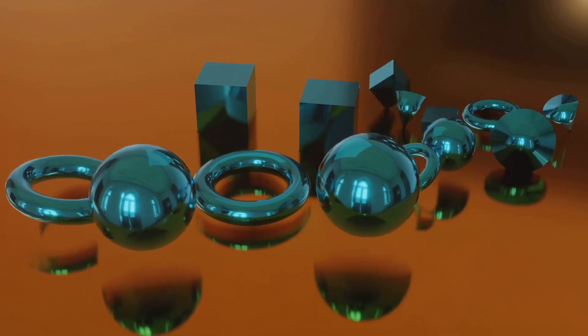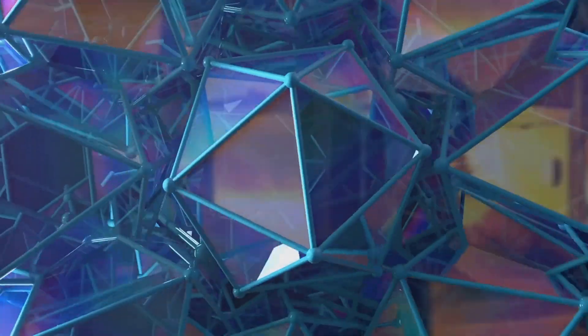But in 4D, we add another direction. Let's call it spissitude. This extra dimension creates a shape called a Tesseract.